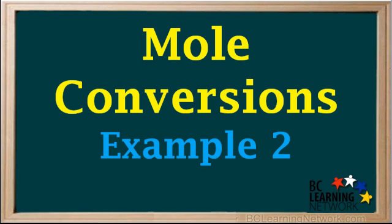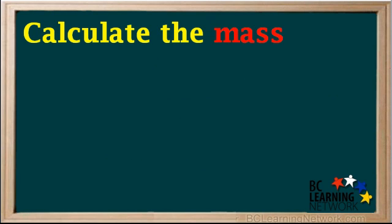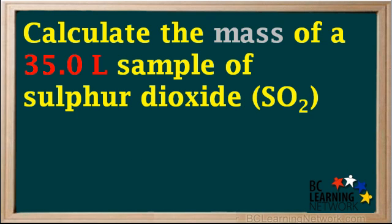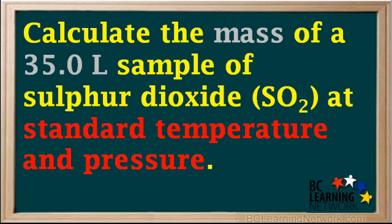This is example two of our mole conversion problems. You're asked to calculate the mass of a 35 liter sample of sulfur dioxide at standard temperature and pressure. Remember, standard temperature and pressure is abbreviated as STP.